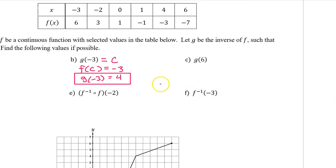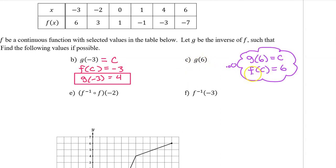For the rest of the problems, I'm going to show this logic in a thought bubble. So for part C, we need to find g at six. By the properties of inverses, g at six will equal c if and only if f at c is equal to six. So f at what is equal to six? That's not negative one or negative three — there is no value, so it's not possible.